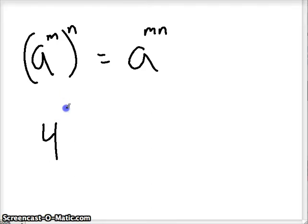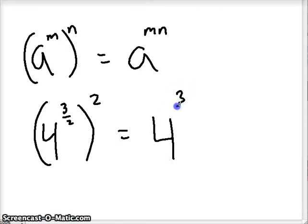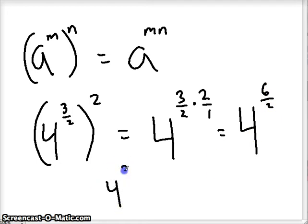So, what that looks like with fractional exponents. Let's see. What was it? Three-halves. Let's say. All squared. So, in this case, we would multiply our exponents. And when we multiply fractions, we multiply straight across. So, we would get six on top, two on the bottom, which reduces to three. So, we have 4 to the third, which becomes 64.